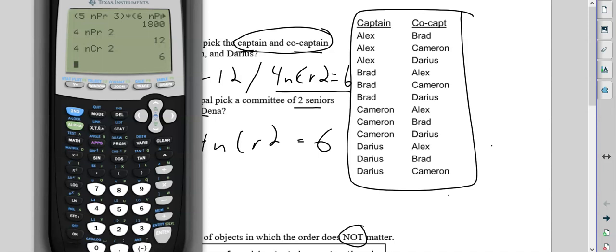So let's see how you do that in the calculator. It's very similar. You do the four, you go to math, PRB, and instead of hitting two, we're going to hit three NCR, and there you go.